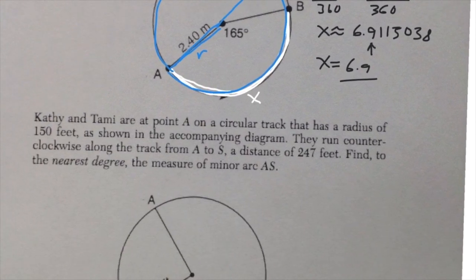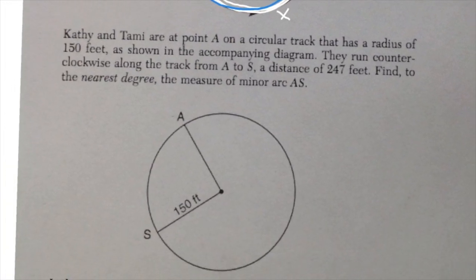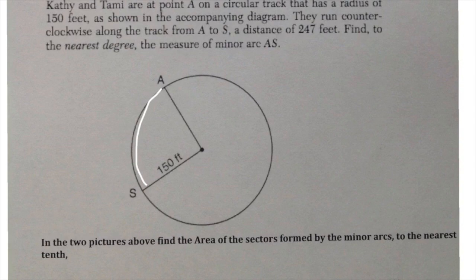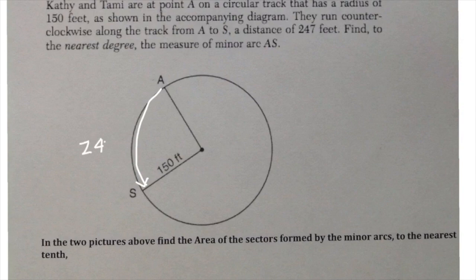On to the next question: finding the length of a minor arc. Once you've read the question, unpause the video. They're running from A to S in a counterclockwise direction. They tell us the arc length is 247 feet and the radius of the circle is 150 feet. What we're after is how many degrees are in the central angle.